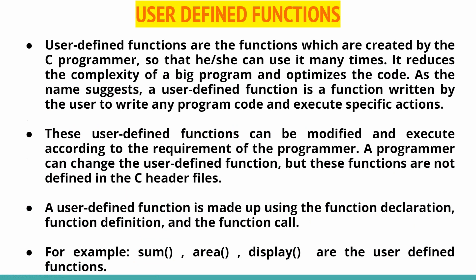The next category is user defined functions. These are functions created by the C programmer so that they can be used multiple times. Any large program is divided into small sub-programs, each performing a specific task. Any user defined function is made up of three critical components: function declaration or function prototype, function call, and function definition.